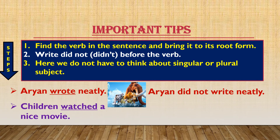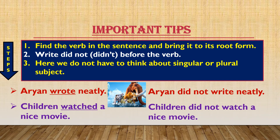Let us try another one. 'Children watched a nice movie.' What is the verb here? Yes, it is 'watched.' What is the root form of 'watched'? It is 'watch.' So just bring the verb back to its root form and add 'did not.' Rest everything remains the same, and your sentence will become: Children did not watch a nice movie.